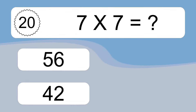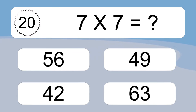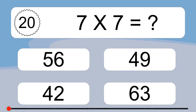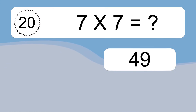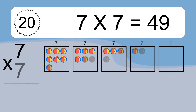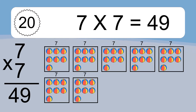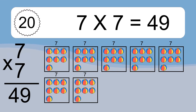7 times 7 equals what? 7 times 7 equals 49. We have 7 boxes, and each box has 7 colorful balls inside. If you count all the balls in all the boxes together, you will have 7 times 7 balls. This equals 49 balls.